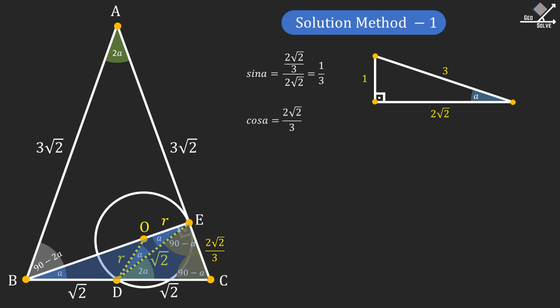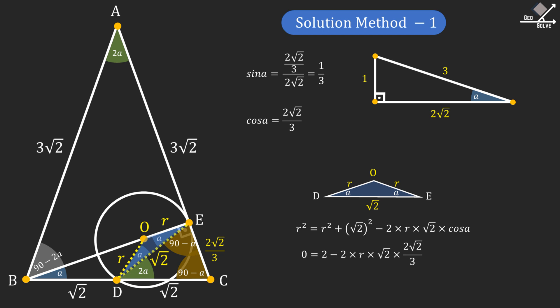Now let's focus on triangle ODE and apply the cosine theorem. Applying the cosine theorem for the radius, we will have the following expression. Inserting the value of cosine A and simplifying the expression, we will have this equation. From here R can be calculated as 3 over 4, which will be our answer.